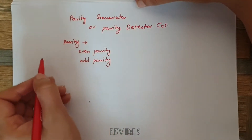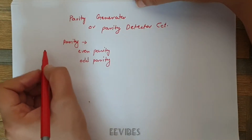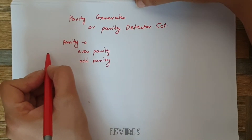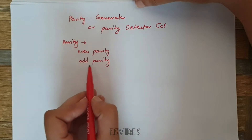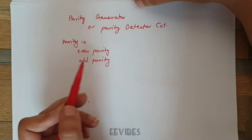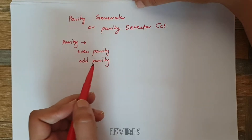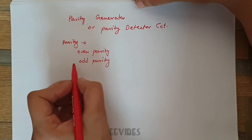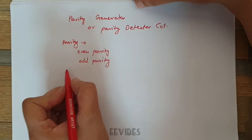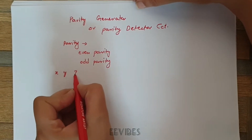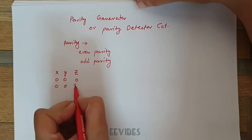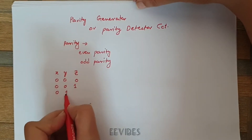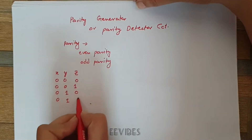In even parity, you make the number of ones in the transmitted message — including the parity bit — equal to an even number. In odd parity, you make the number of ones in the transmitted message equal to an odd number. Let's say the message consists of three bits X, Y, and Z, and there are all possible combinations of a three-bit number.